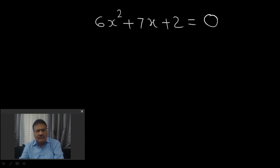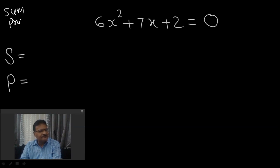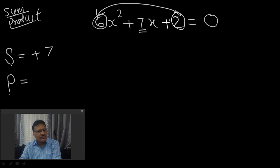I will take a question to understand this. Suppose 6x² + 7x + 2 = 0. This is a quadratic equation. Now, to make the factors of this equation, I will use two things: S and P — S ka matlab sum aur P ka matlab product. So for sum, write the middle term's coefficient, that is 7 (with its sign).